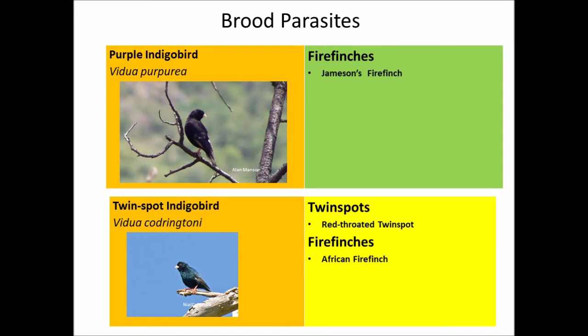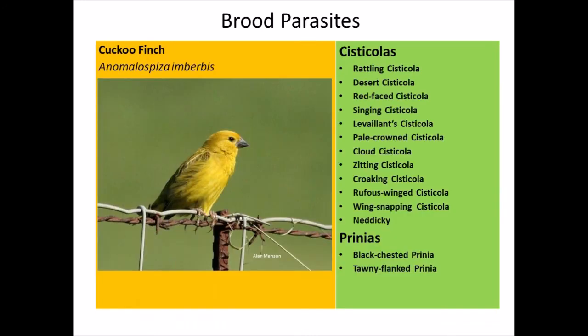Jameson's Firefinch is the host for the Purple Indigobird — remembered as PJ for pyjamas. The Twinspot Indigobird has the red-throated twinspot as a host, hence the name, and occasionally the African firefinch. Finally, the Cuckoo Finch, also from the family Viduidae, is a specialist on cisticola species and prinias, including the rattling, desert, red-faced, singing, tawny-flanked, pale-crowned, cloud, zitting, croaking, rufous-winged, and wing-snapping cisticolas, the neddicky, and the black-chested and tawny-flanked prinias.